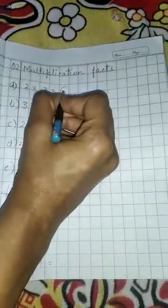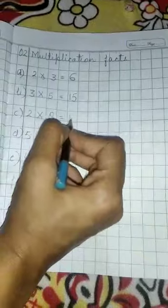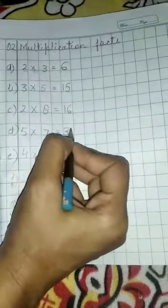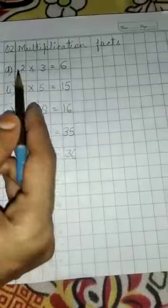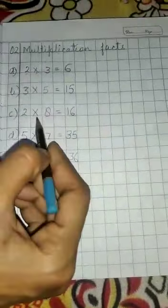Two, threes are six. Three, fives are fifteen. Two, eights are sixteen. Five, sevens are thirty-five. Four, nines are thirty-six. Kya padhaaamne? What we have read? We have read the table. Humne table padhiye. Okay.